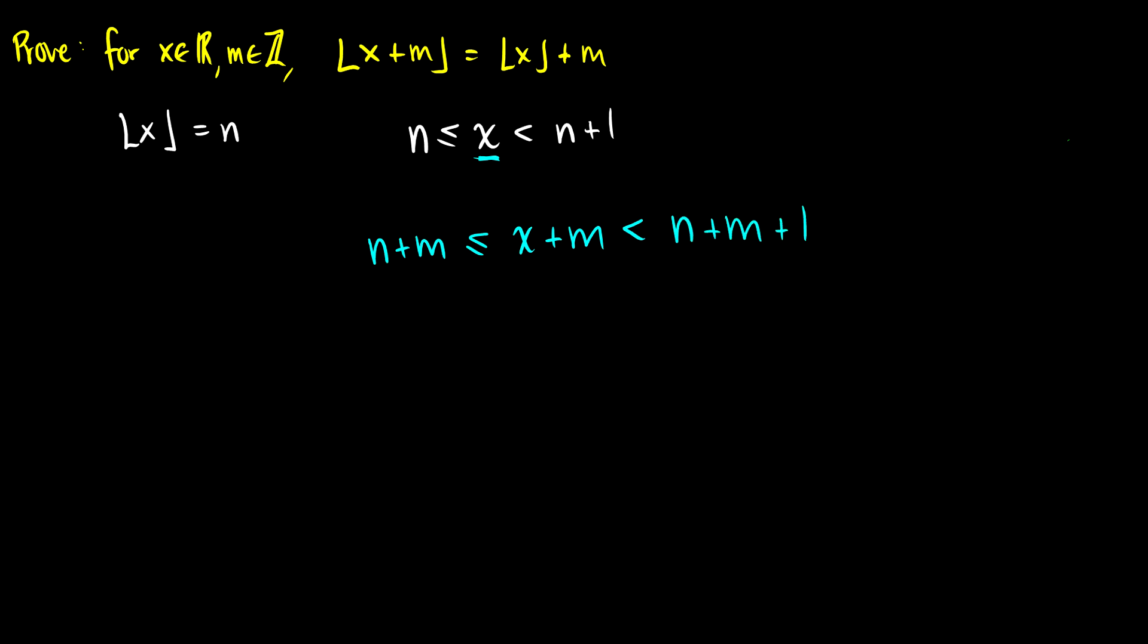So what do we notice here? We have the same pattern as our definition. So we can bracket this x plus m, n plus m, n plus m plus 1. And we see that the definition here, if we use the definition, this is like saying that the floor of x plus m is equal to n plus m.